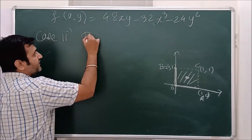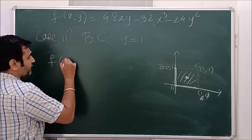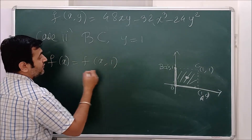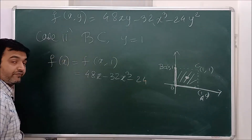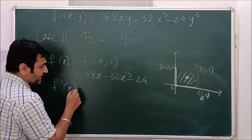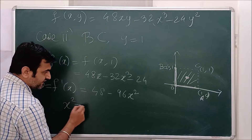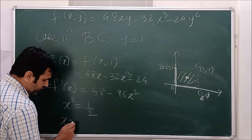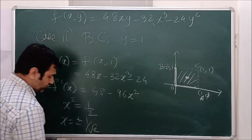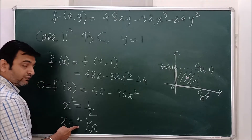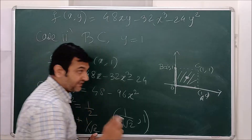On segment BC (y = 1 fixed): f becomes f(x, 1) = 48x − 32x³ − 24. The derivative is 48 − 96x² = 0, giving x² = 1/2, so x = ±1/√2. Since x must be in [0, 1], x = −1/√2 is excluded. Thus x = 1/√2 is valid, giving the interior critical point (1/√2, 1).